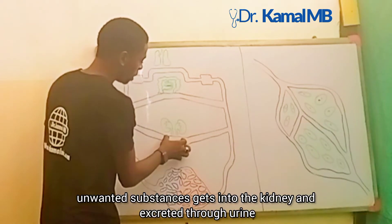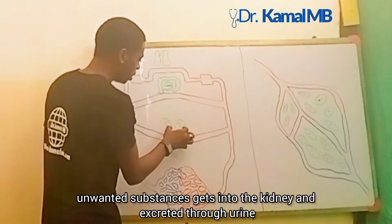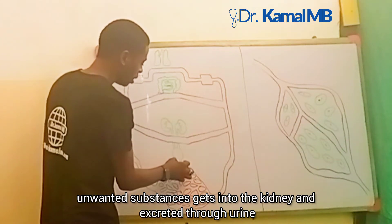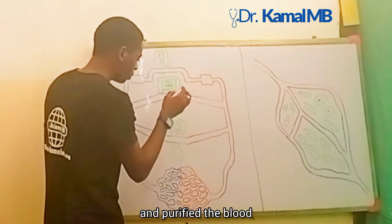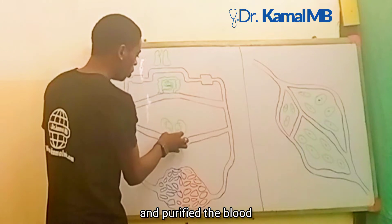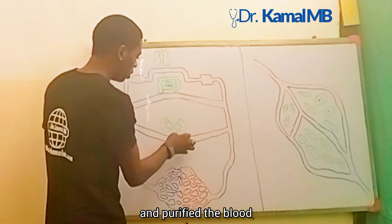Unwanted substances get into the kidney and are excreted through urine, purifying the blood.